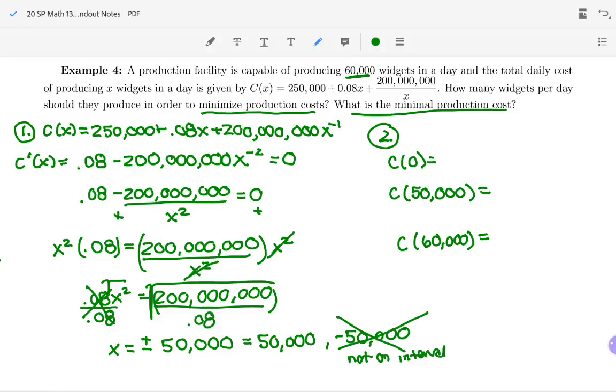So where do we plug in to compare y values? We plug in to the original. So plugging in zero to the original, what do you get? 250,000 plus 0.08 times zero plus 200 million divided by zero. What do you get for that answer? I'll give you a hint. It's not 250,000. Why is that? It's because when you plug in zero to this last piece here, you get an error. So it seems like it would be 250,000, but dividing by zero, this is actually undefined.